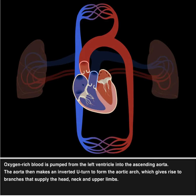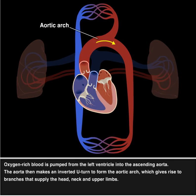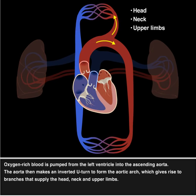Oxygen-rich blood is pumped from the left ventricle into the ascending aorta. The aorta then makes an inverted U-turn to form the aortic arch, which gives rise to branches that supply the head, neck, and upper limbs.